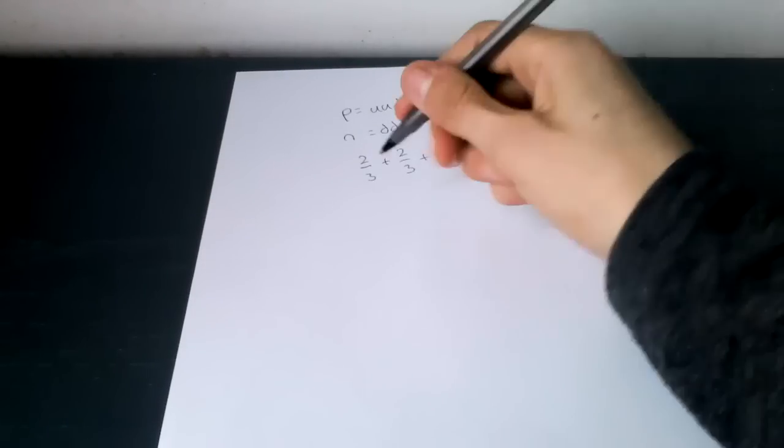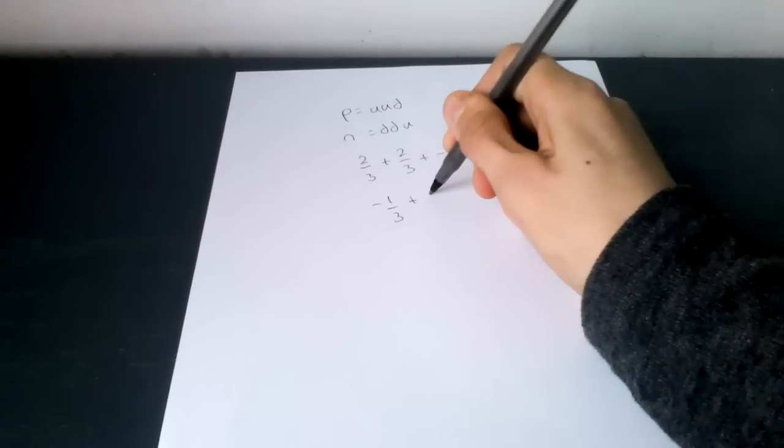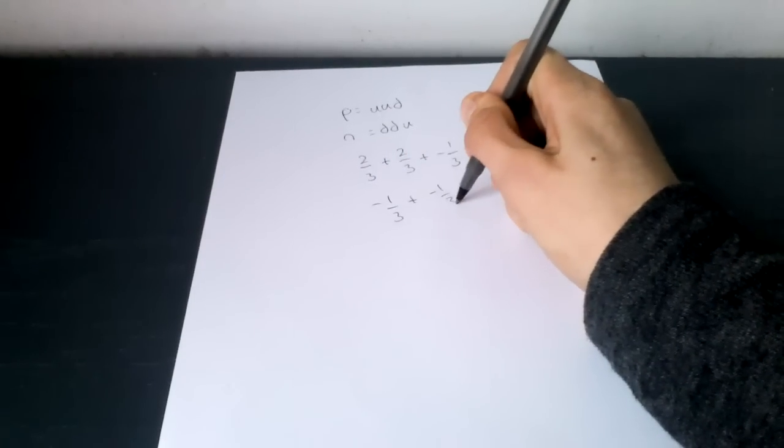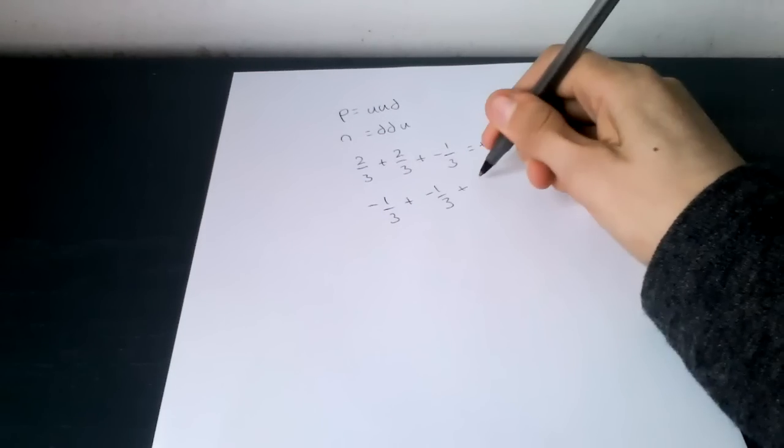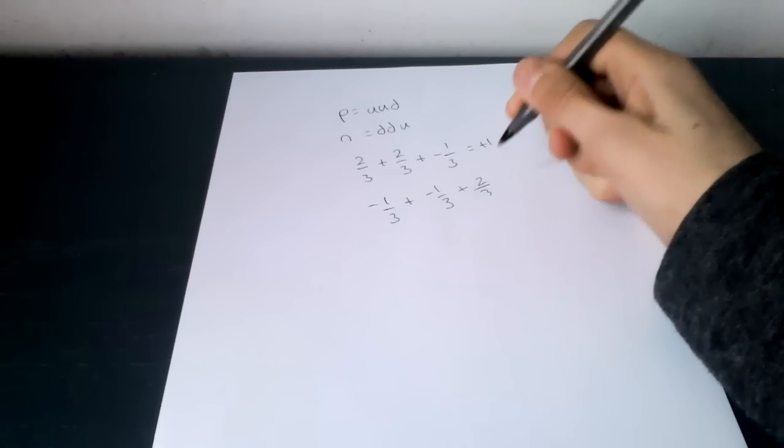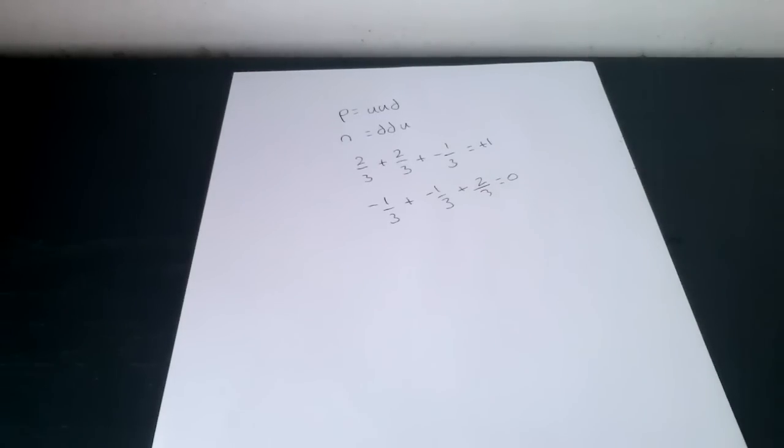In a neutron, there's two downs, so that's minus 1/3 plus minus 1/3 plus 2/3. That's zero. So that's basically where the charge is coming from. That may be very handy for the test.